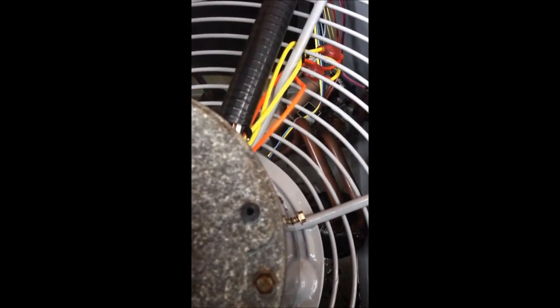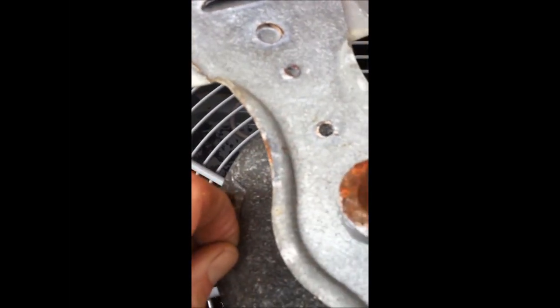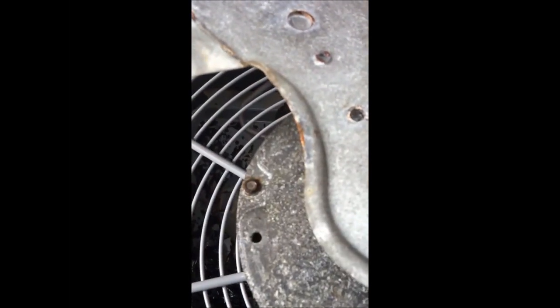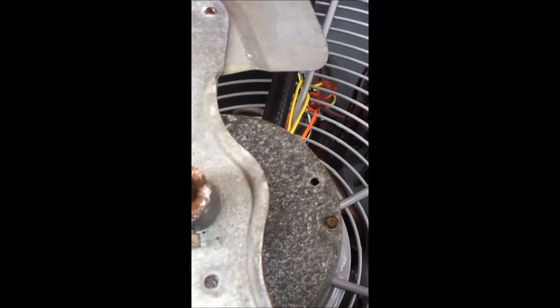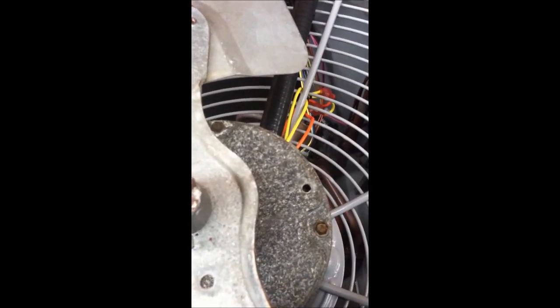And this allows condensation and moisture to drain out of the body of the motor. That one's been removed. And they should be removed when they're installed. And this will prevent moisture from collecting inside the housing and then ruining the bearings on the condenser fan motor.